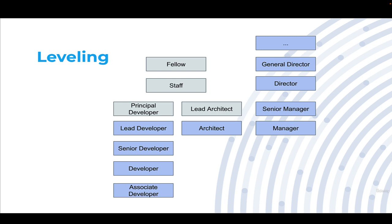The associate or junior level is an entry-level position — somebody right out of college with their first programming job, making the least amount of money. Right above them is just the regular developer, typically someone with three to five years of experience. Above that we get into senior developer roles, someone with five to seven, maybe eight years of experience, with a bit more responsibility — they may even serve a role like tech lead.